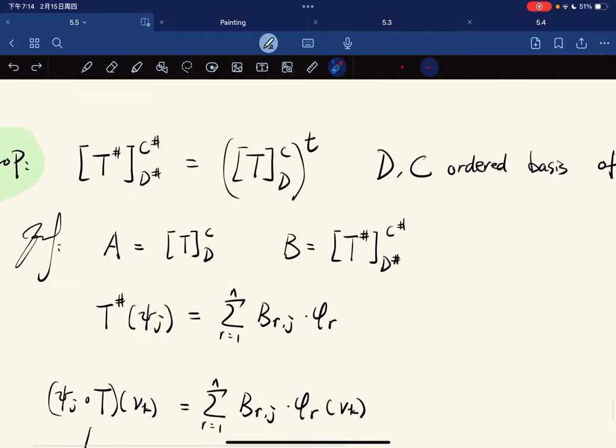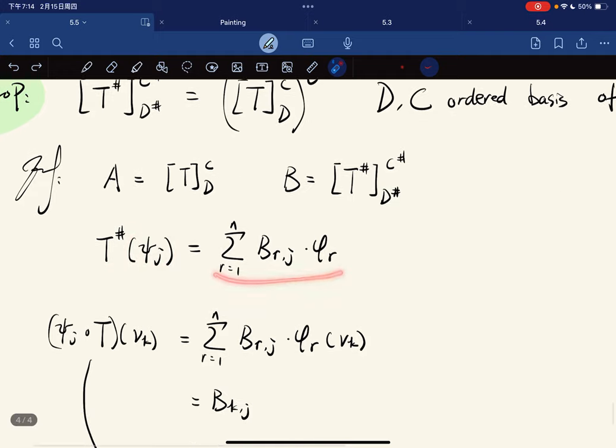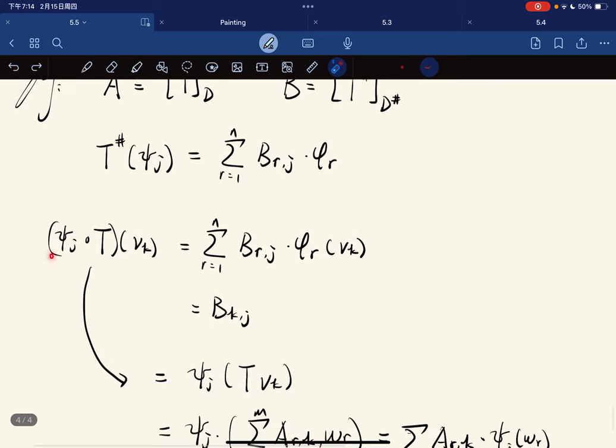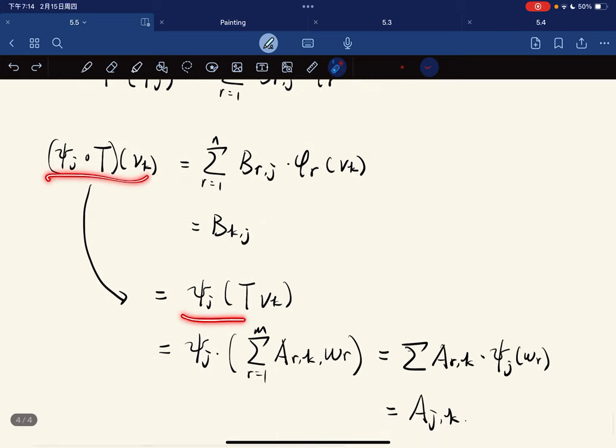This is not hard; we just look at their entries. If A is this matrix and B is this matrix, then T*(φ_j) gives you this representation, and this of v_k gives you b_{kj}.